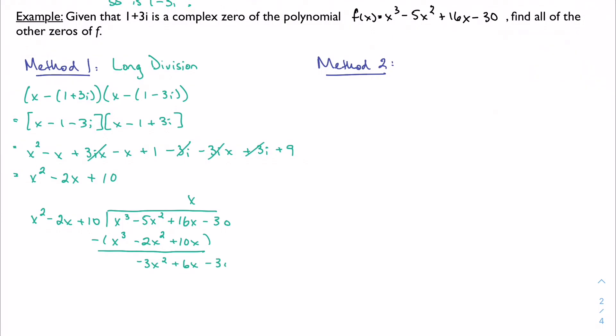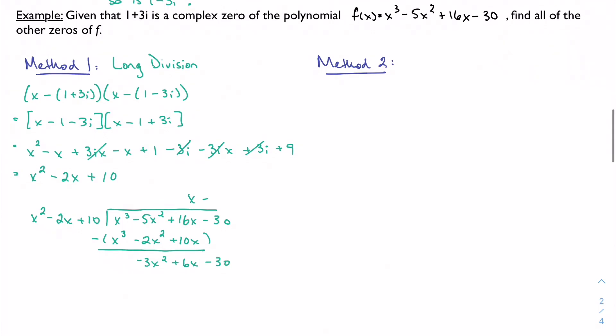x squared goes into negative 3x squared, negative 3 times. Multiply by this. Subtract, zero.